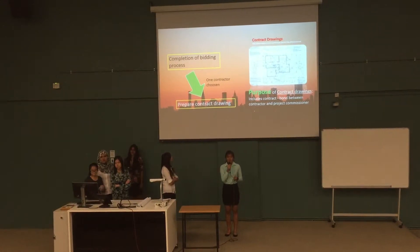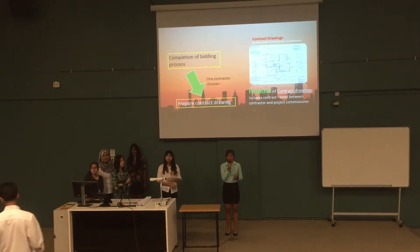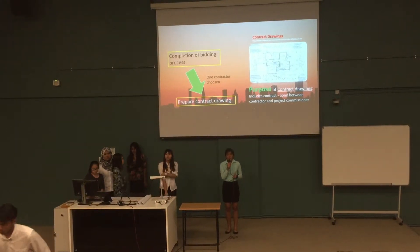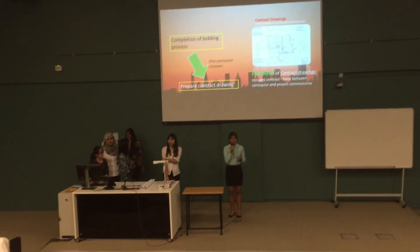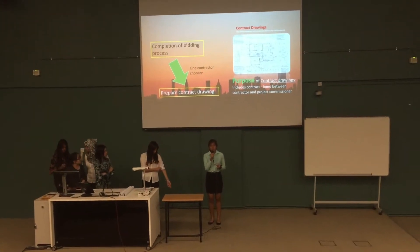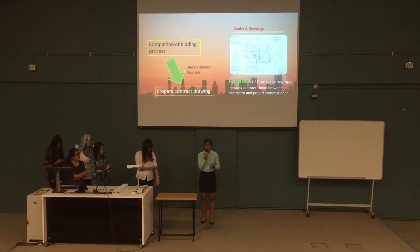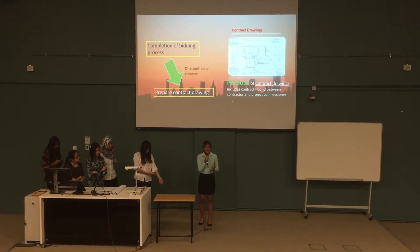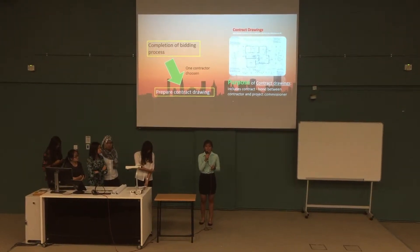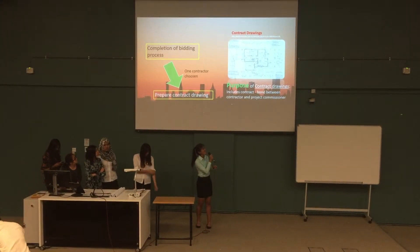The contract drawings are more detailed than tender drawings because they include all amendments resulting from proposals by contractors. This drawing is the same as standard drawings if the standard drawings have no alternate proposals. Due to its importance, this drawing can be printed on good quality paper and given a cloth backing to withstand long-term storage. As you can see, that is an example of the contract drawings.